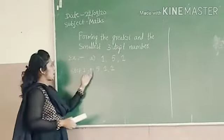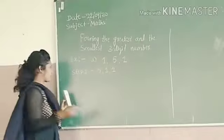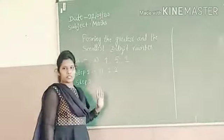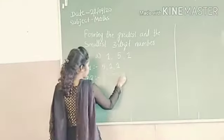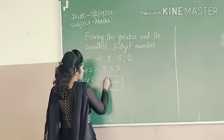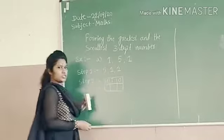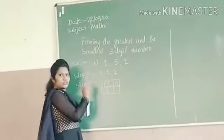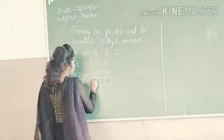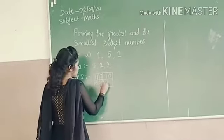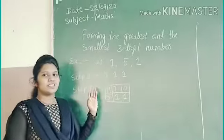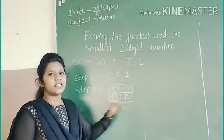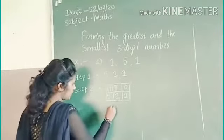Now the second step: we put these numbers in a place value chart. I am making a place value chart with 100s place, 10s place, and 1s place. So, I am putting 5 in the 100s place, 1 in the 10s place, and 1 in the 1s place. The greatest 3-digit number with the given digits is 511.